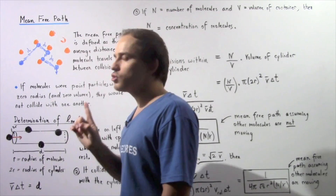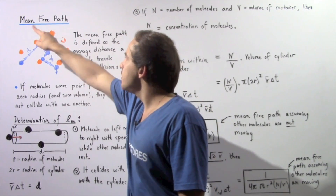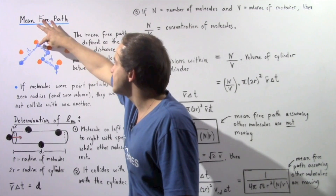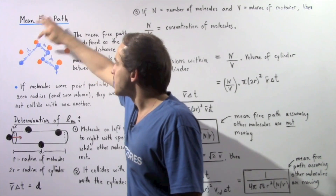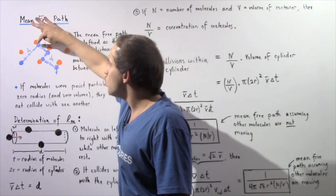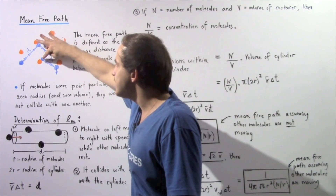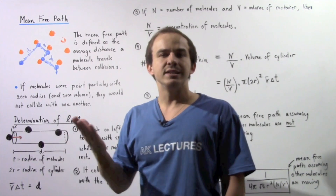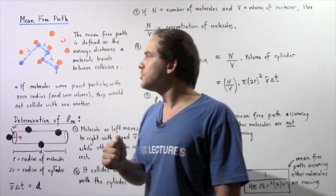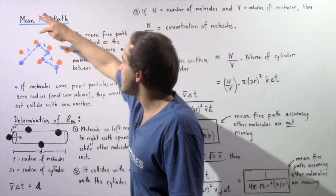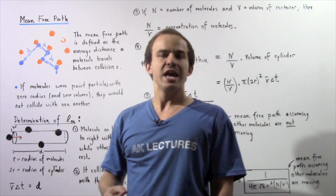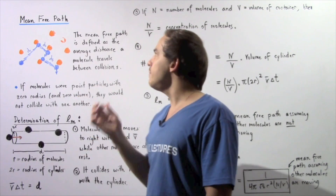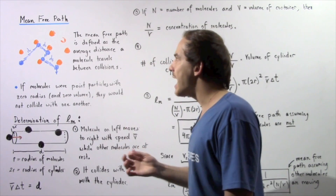we simply find the entire distance the molecule traveled and divide by the number of collisions. So the mean free path is d1 plus d2 plus d3, divided by the number of collisions — in this case, three collisions. And that will give us the mean free path.